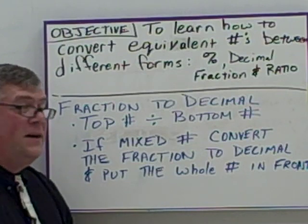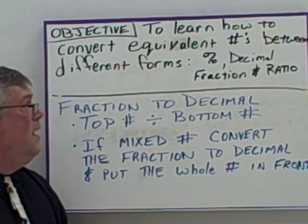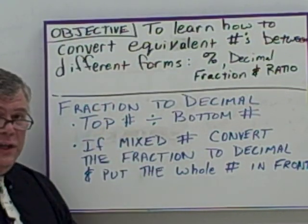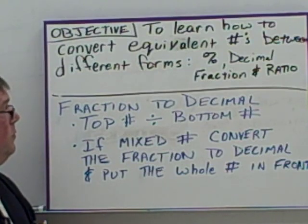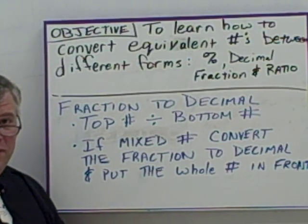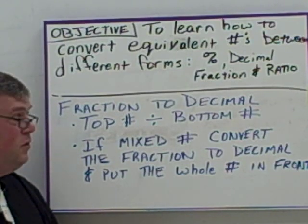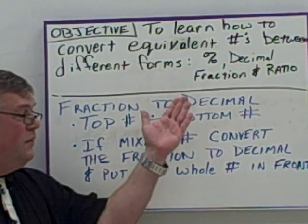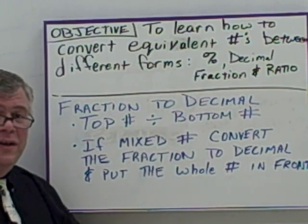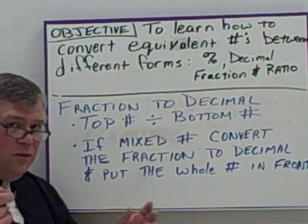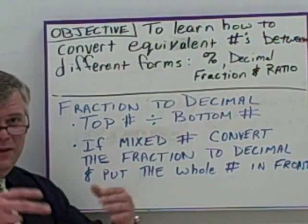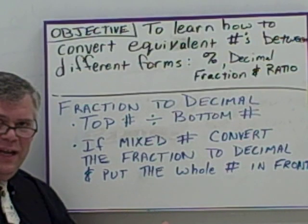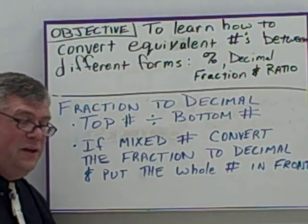Hello, it's Mr. Falk again. The objective of this video is to learn how to convert equivalent numbers between different forms, such as percent, decimal, fractions, and ratios. All those are different forms. You can have the same number look different because it's expressed as a decimal or expressed as a percent, but still be the same value.